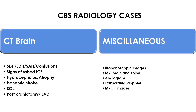In CT brain, they can ask about SDH, EDH, subarachnoid hematoma, contusions, signs of raised intracranial pressure, hydrocephalus, atrophy, ischemic stroke, swelling, and post-craniotomy findings — especially EVDs. Since this is a critical care exam, anything practiced very frequently in the ICU can be asked. Be ready for bronchoscopic images, MRI of the brain and spine, angiogram, transcranial Doppler, and MRCP images. In my exam, they gave one station on transcranial Doppler.